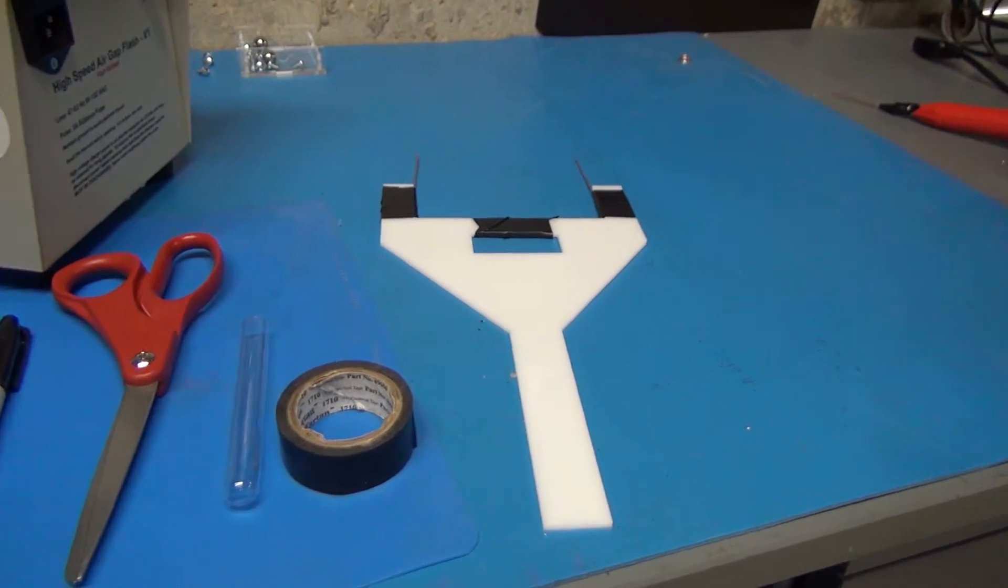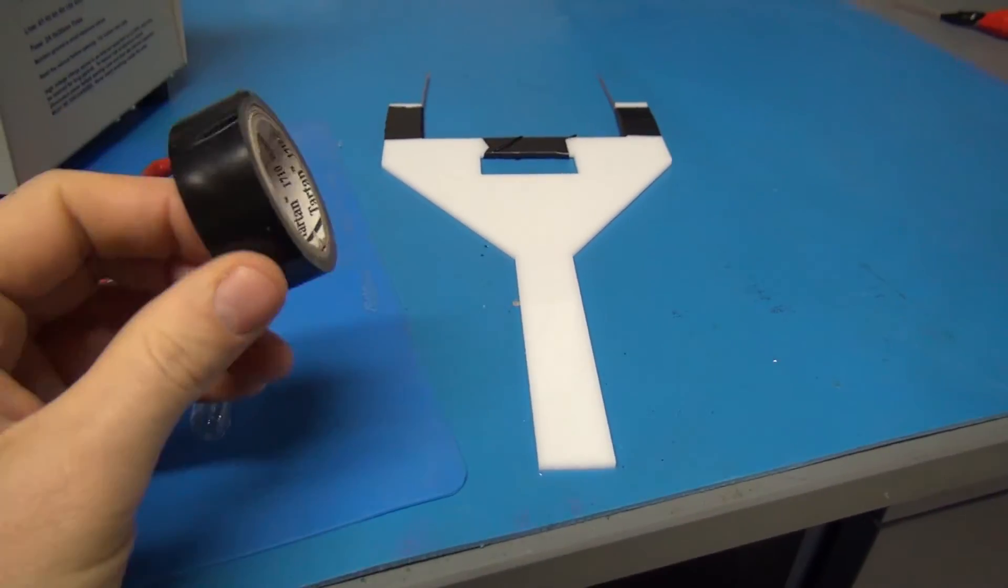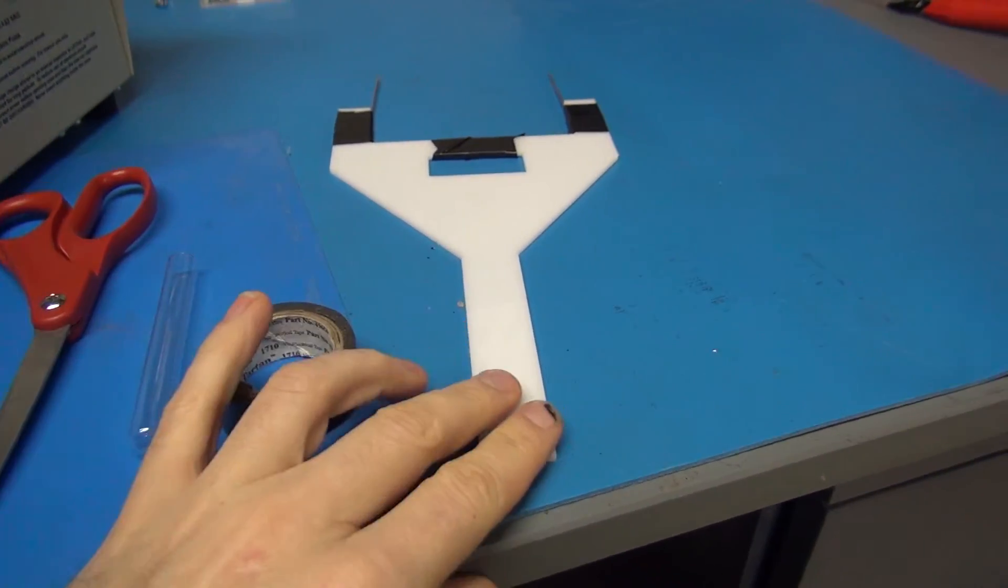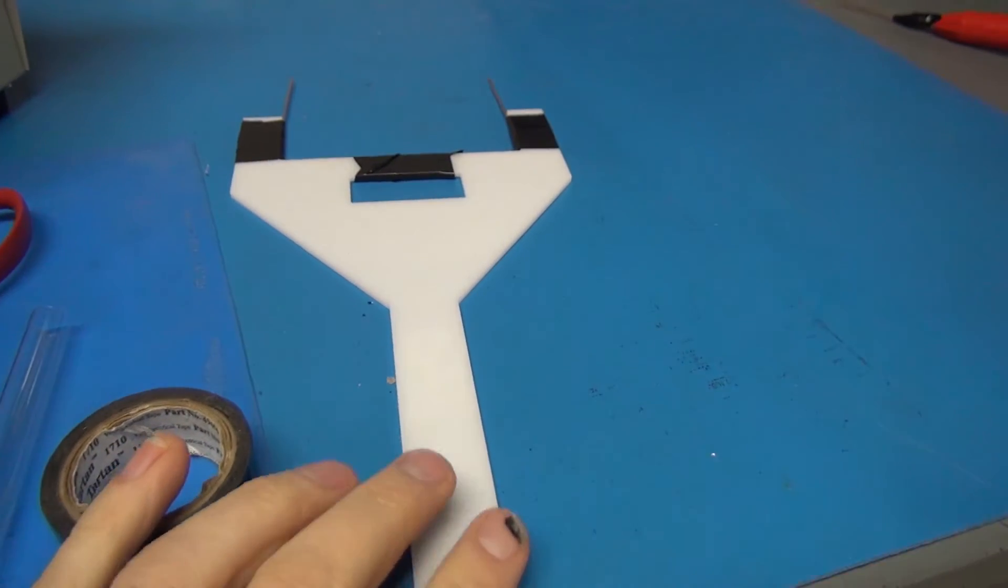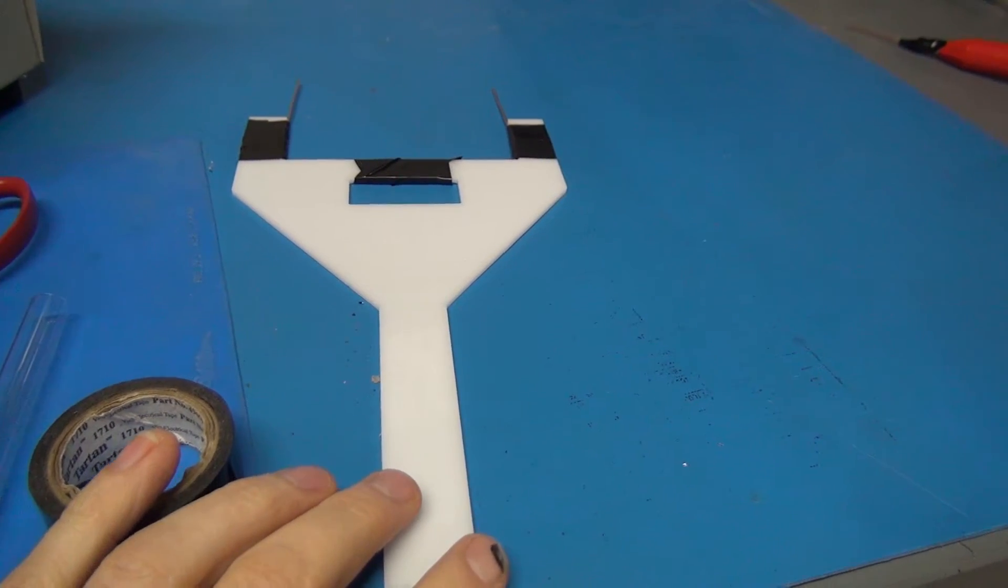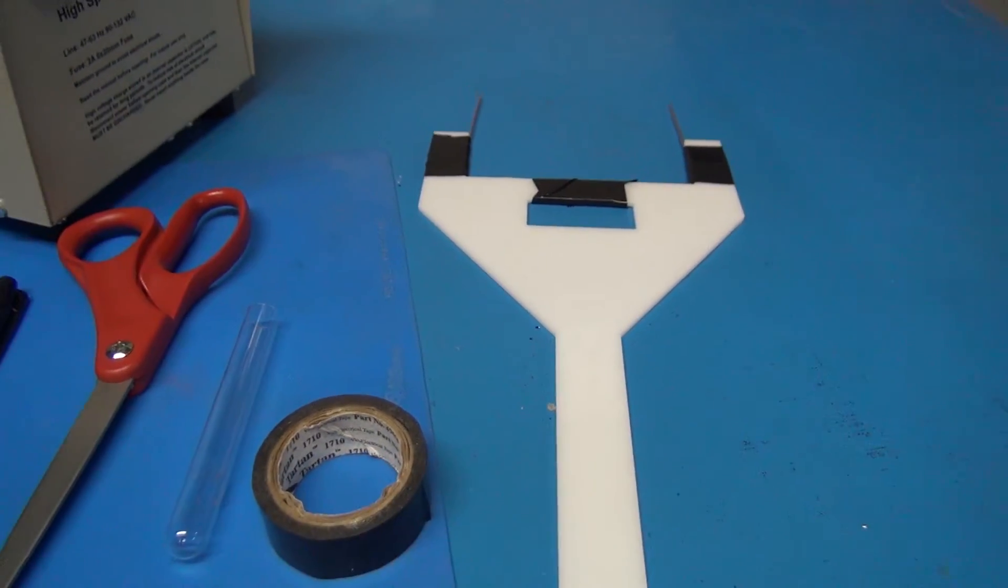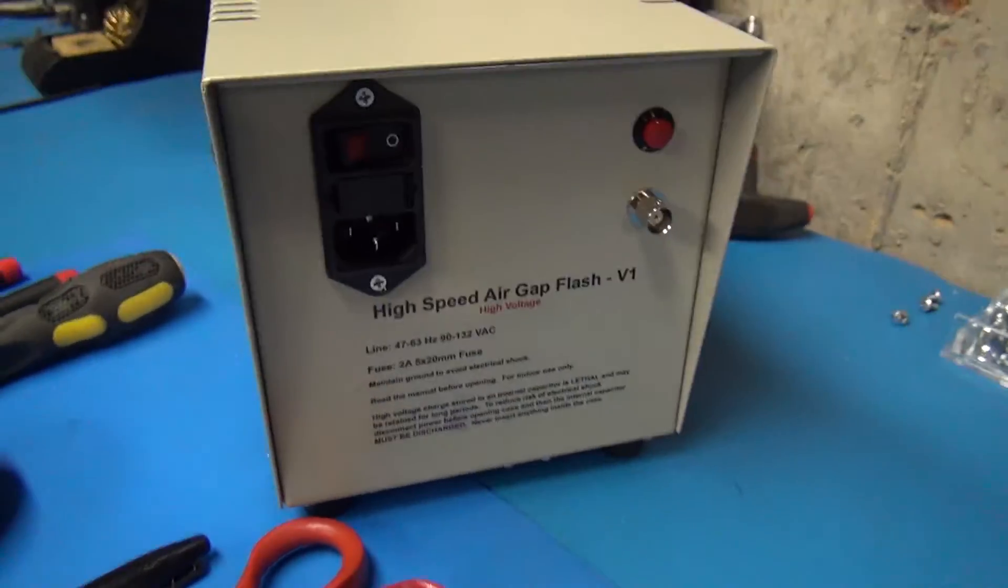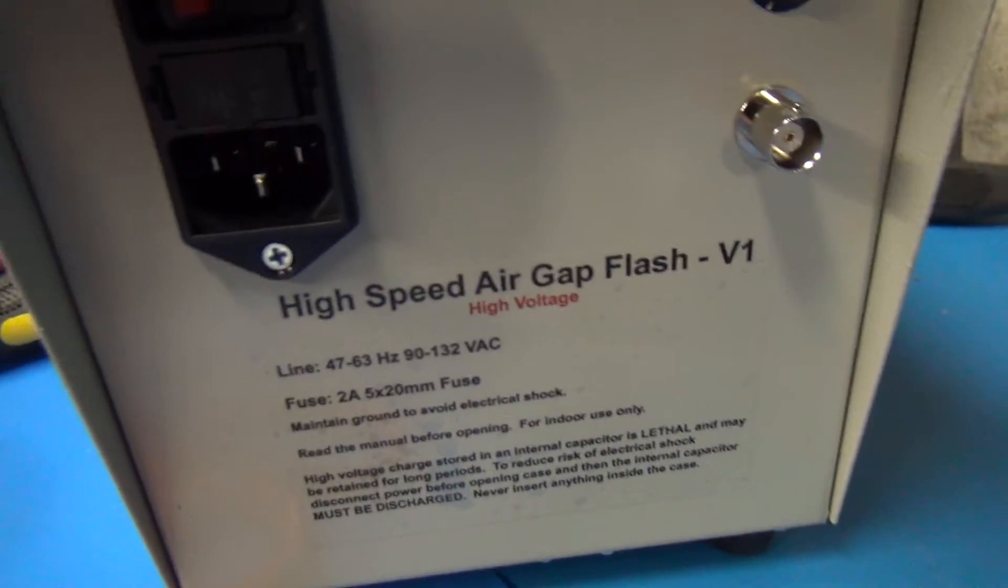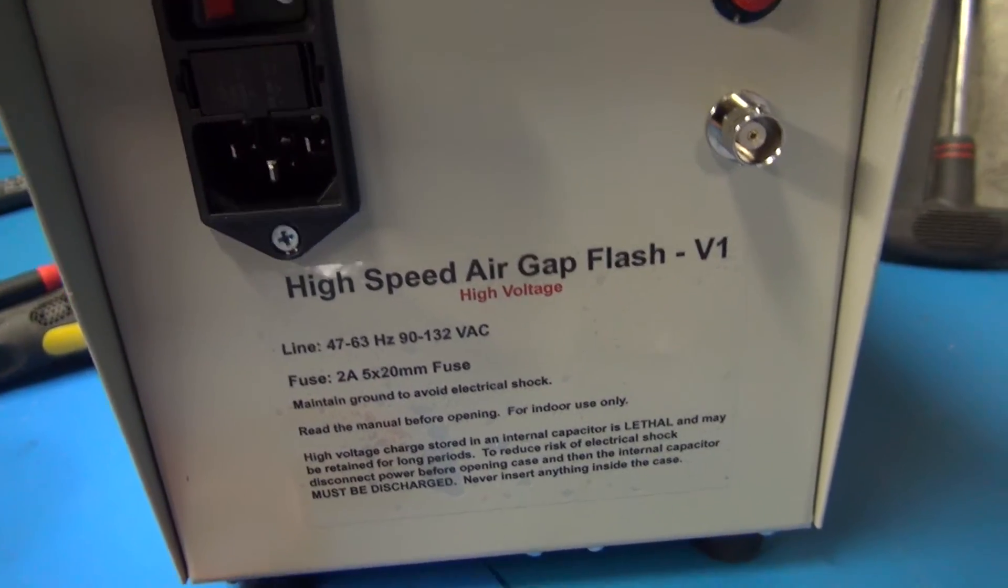Anyways, that's some black electrical tape and this is the discharge stick that comes with the air gap flash that is necessary to be safe. And yeah, just don't forget about the safety warning that's on the back here.